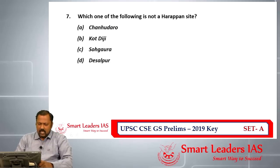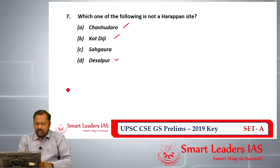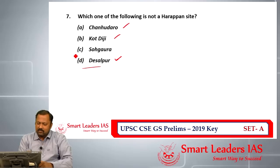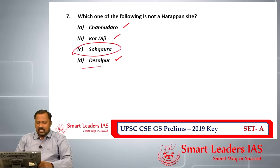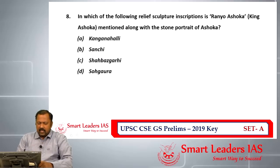Question number seven asks which of the following is not a Harappan urban site. Chanhudaro, Dhaulavira, and Surkotada are all urban sites, with Surkotada being in Gujarat. The answer — the site that is not an urban site — is Soghara. So the answer for question number seven is C.